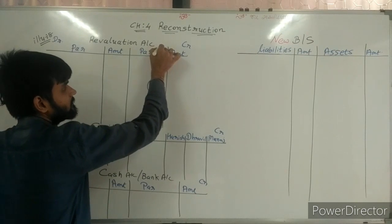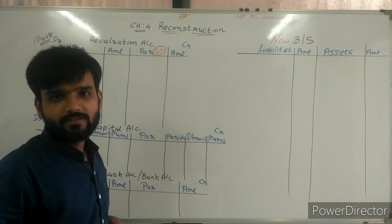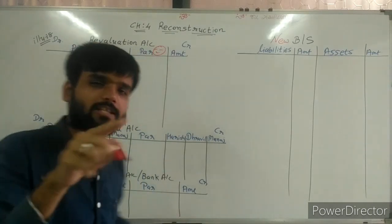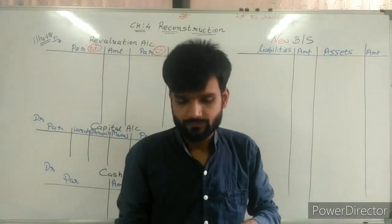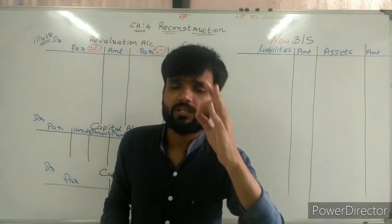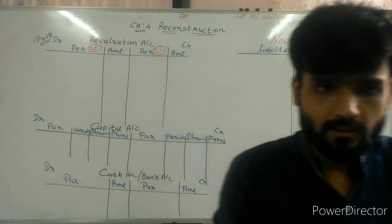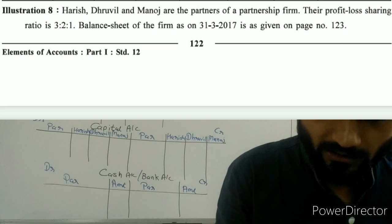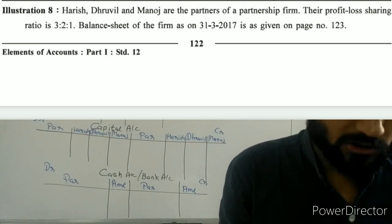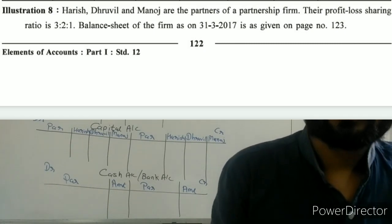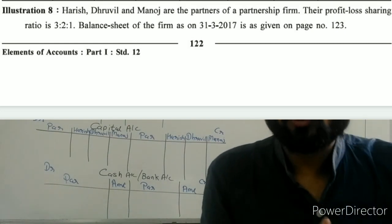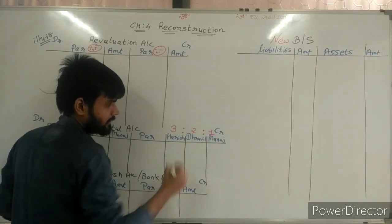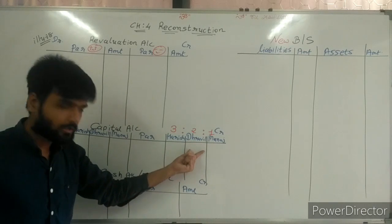Now I am reading the question from the textbook. Illustration number 8: Harish, Dhruvil, and Manoj are partners of a partnership firm. Their profit and loss sharing ratio is 3, 2, and 1. The balance sheet of the firm as on 31/3/17 is given on page number 123.